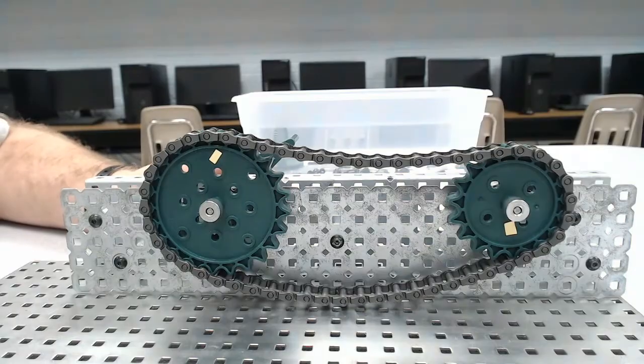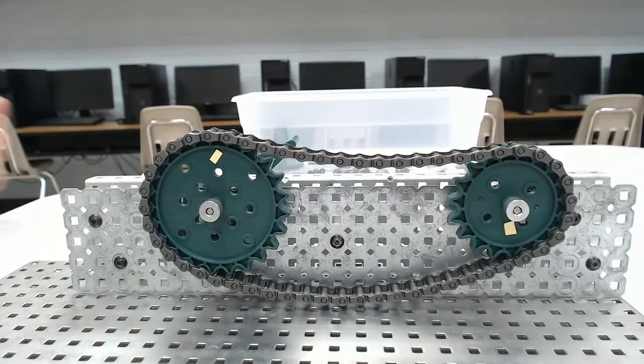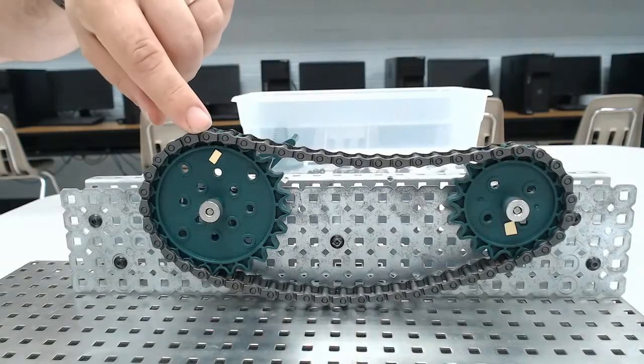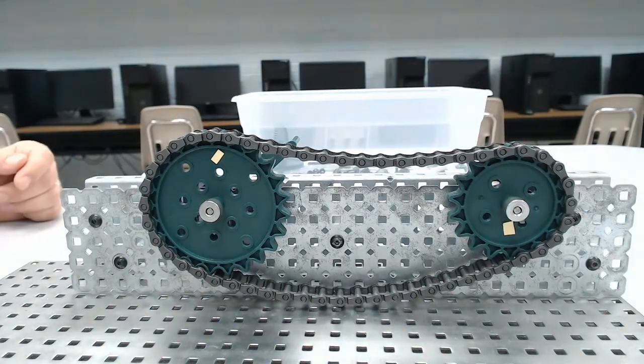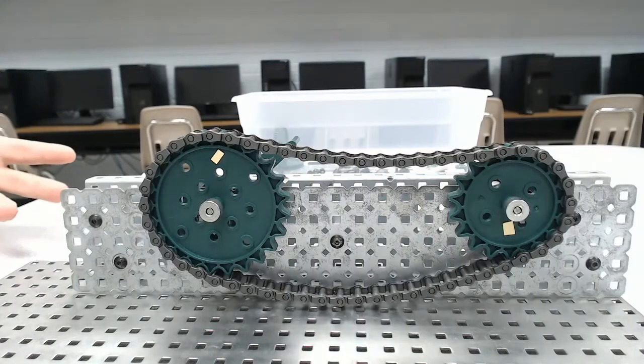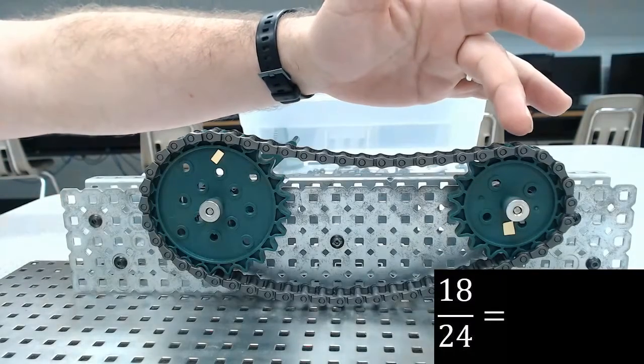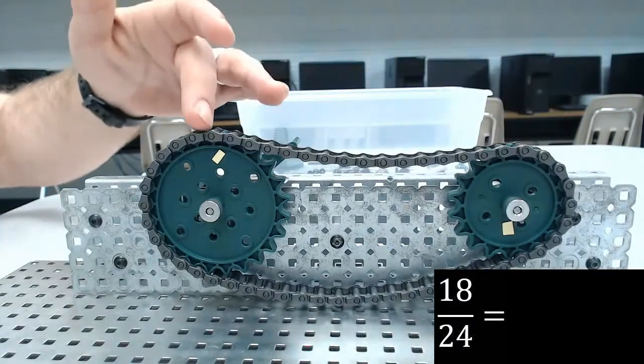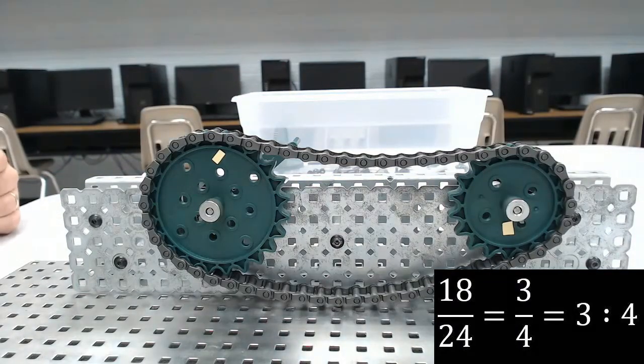So now let's take a look at speed and torque, and for that we need to understand the gear ratio. Let's start by saying that this is a 24-tooth and this is an 18-tooth sprocket. So if we examine our formula, we're going to take 18 divided by 24 to get a ratio of 3 to 4.